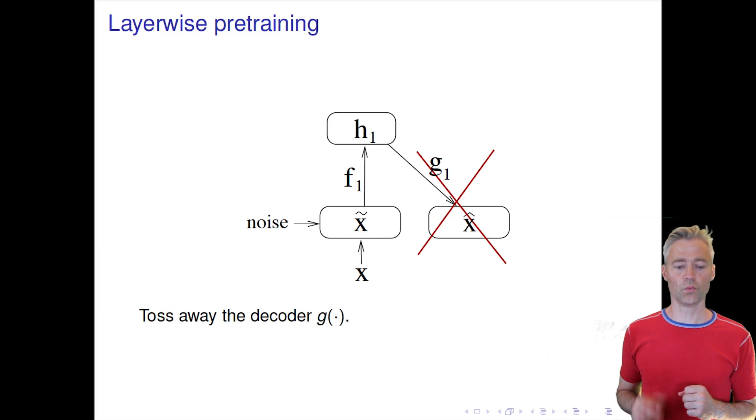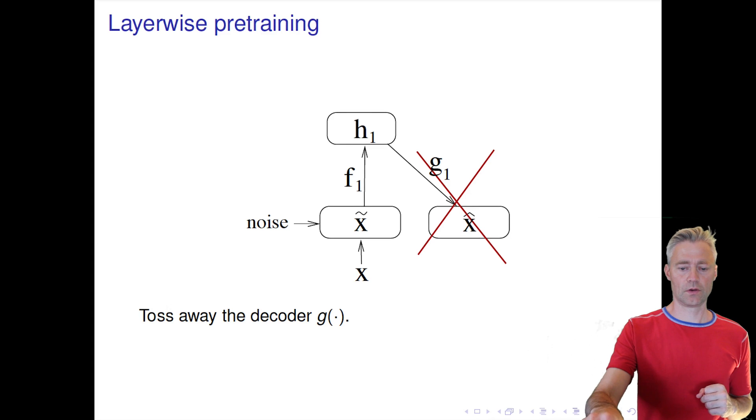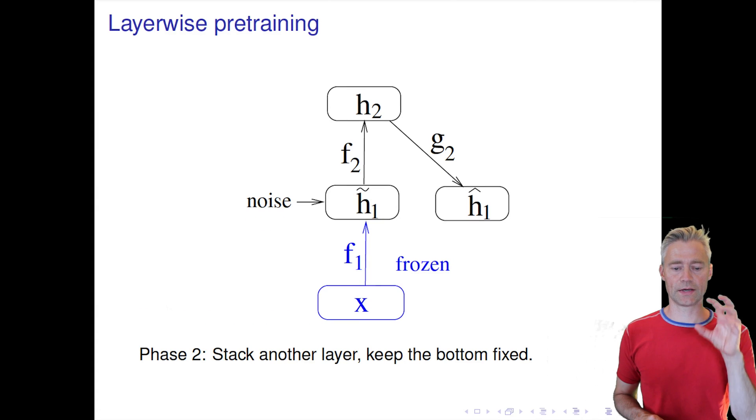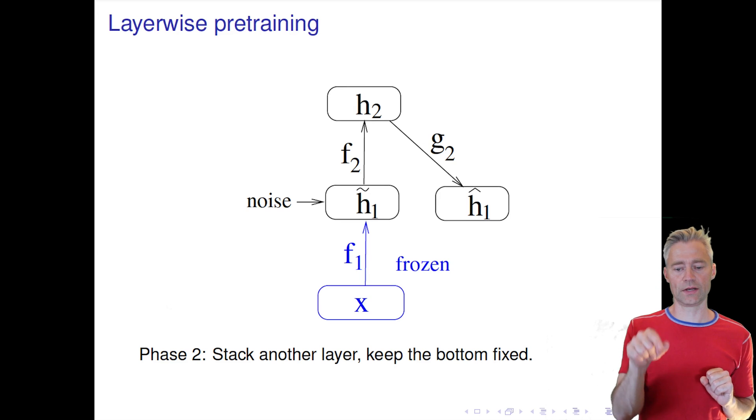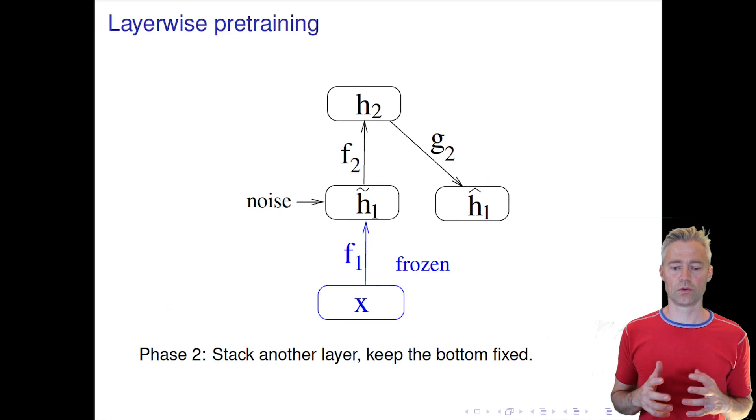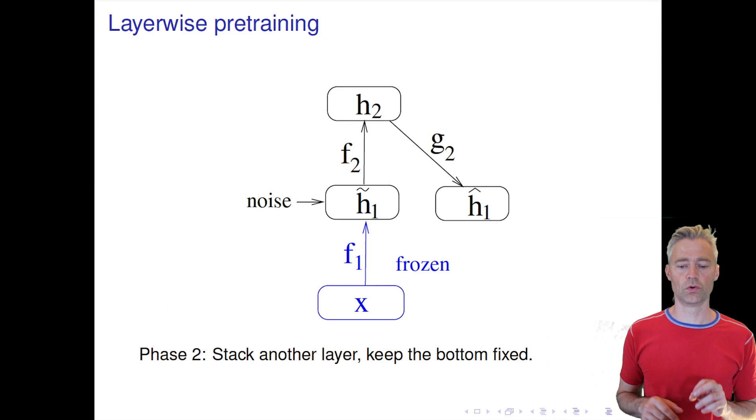In the next step we forget about G and take our hidden representation H1 and add new noise to that, and then we train another denoising autoencoder to reconstruct the uncorrupted version of the latent variables H1.